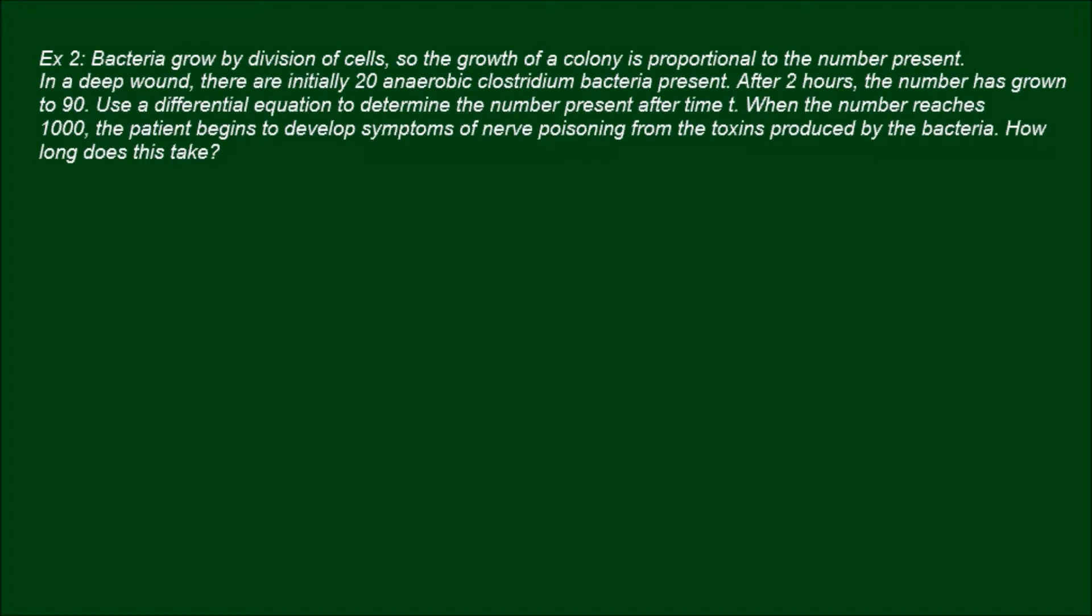Use a differential equation to determine the number present after time t. When the number reaches 1000, the patient begins to develop symptoms of nerve poisoning from the toxins produced by the bacteria. How long does this take? Well first of all this sounds quite nasty, so I guess it's a warning not to cut yourself.